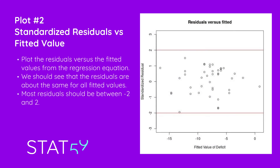Plot number two: we plot the residuals versus the fitted values from the regression equation. Again, we should see that residuals are about the same for all fitted values, with most residuals between minus 2 and 2. Here we see that result, and we can state in our discussion that the plot of residuals versus fitted values supports the linear model.